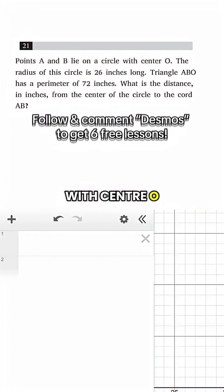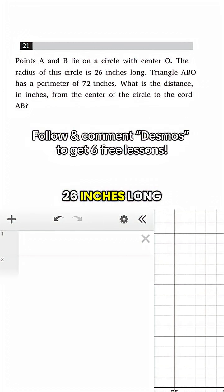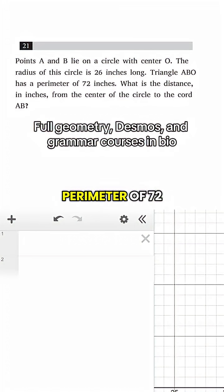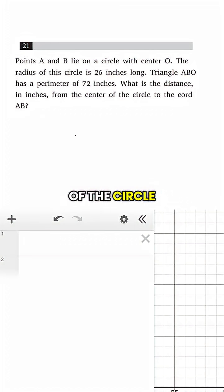We're asked, points A and B lie in a circle with center O. The radius of the circle is 26 inches long. Triangle ABO has a perimeter of 72 inches. What is the distance in inches from the center of the circle to the chord AB?